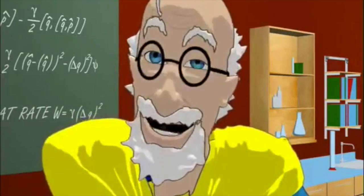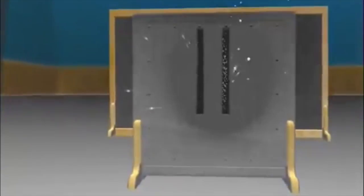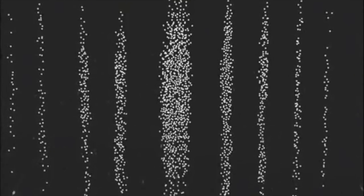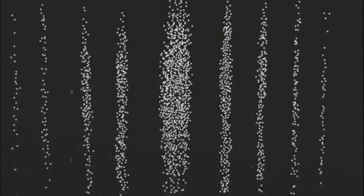We fired electrons, tiny bits of matter, through. But we get a pattern like waves, not like little marbles. How? How could pieces of matter create an interference pattern like a wave?